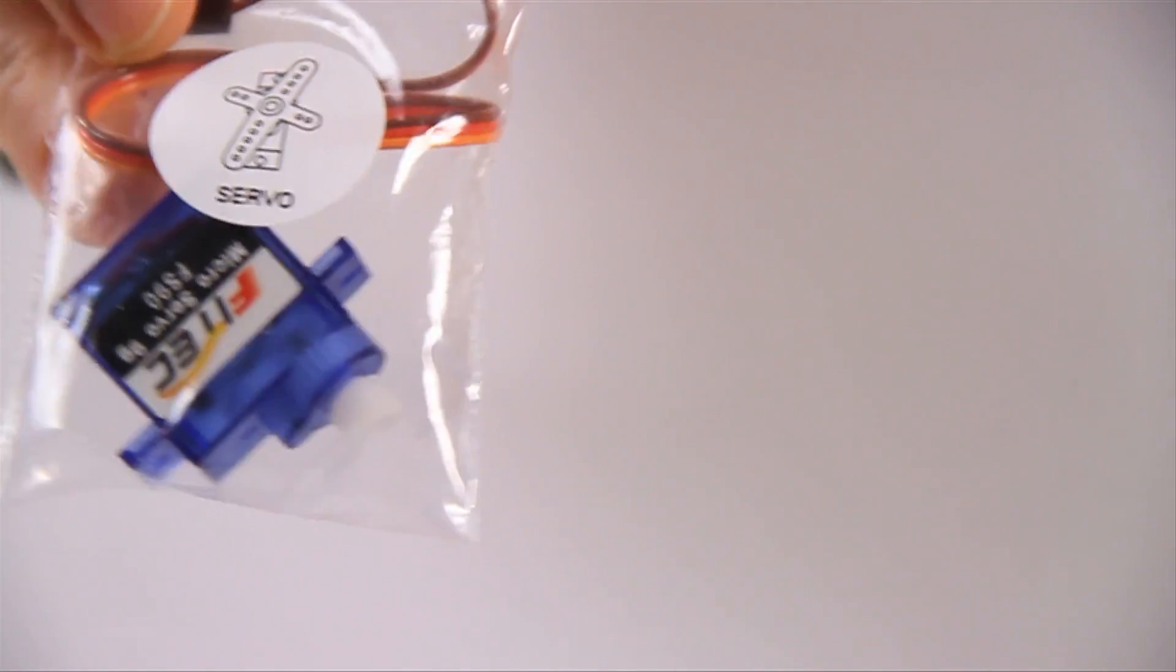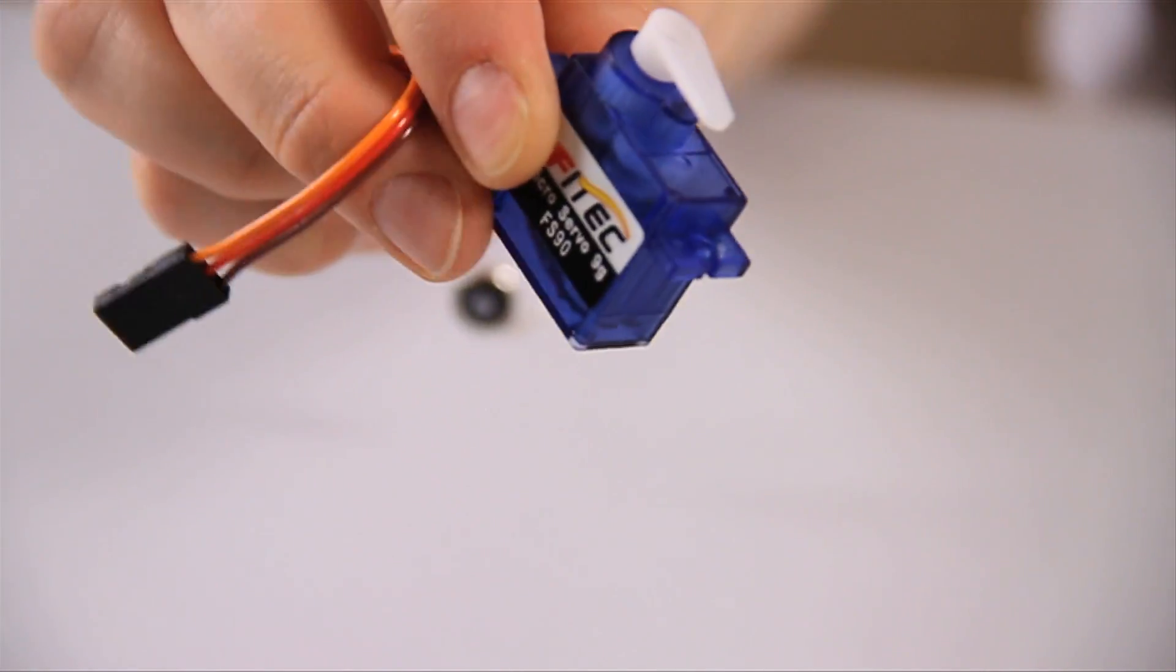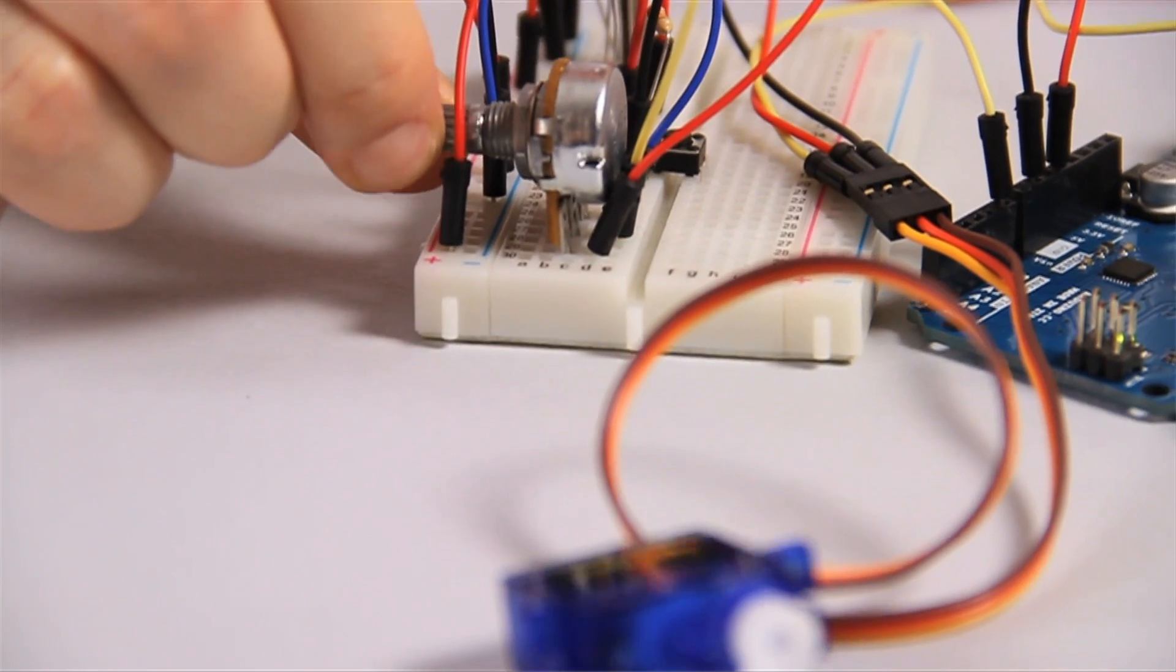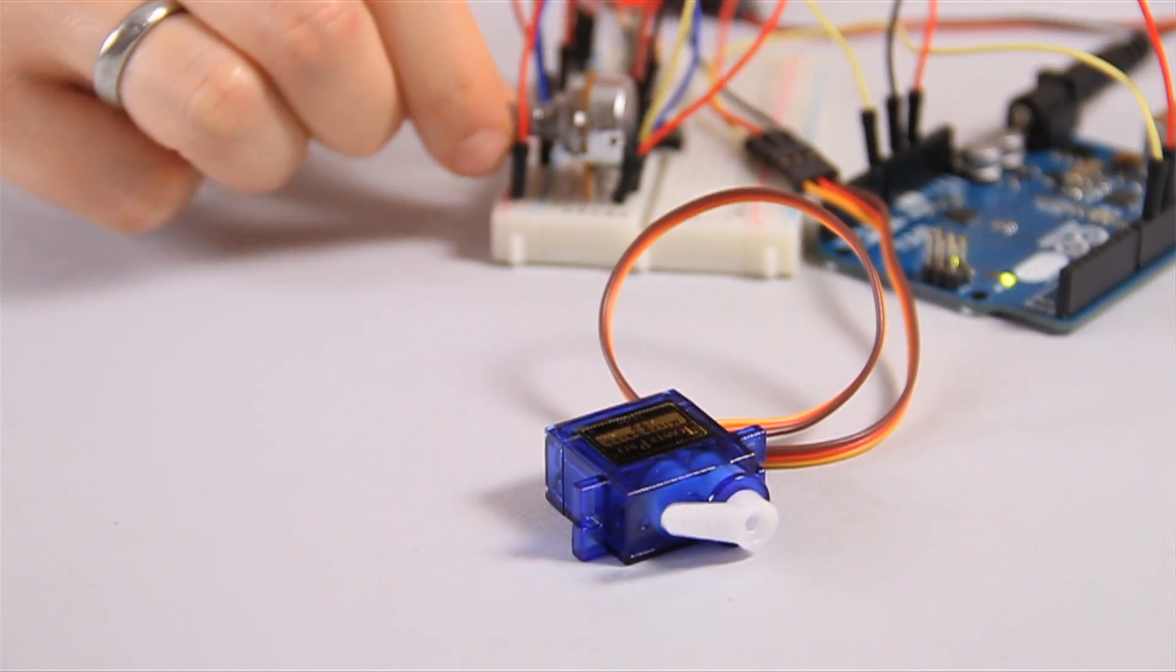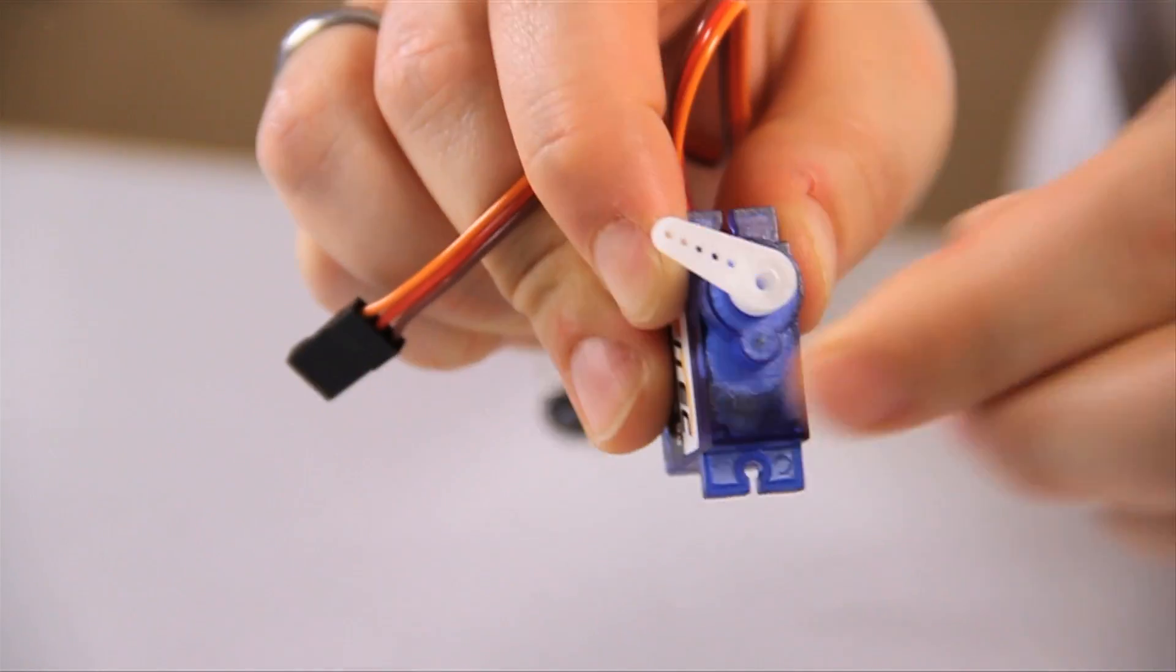So this chunky component is called your servo. Your servo has integrated gears and a shaft that can be precisely controlled. You can hear it there. Standard servos allow the shaft to be positioned at various angles, usually between 0 and 180 degrees. So it can go from there all the way around to there and then stops.